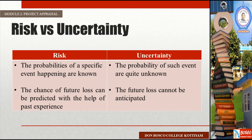The decision situation as to risk may be classified into two: Risk and Uncertainty. What is the difference between risk and uncertainty? Under risk, the probabilities of a specific event happening are known. Under uncertainty, the probability of such events are quite unknown.